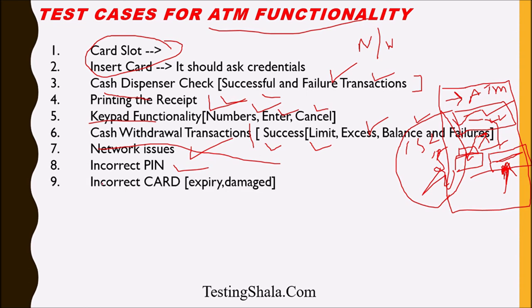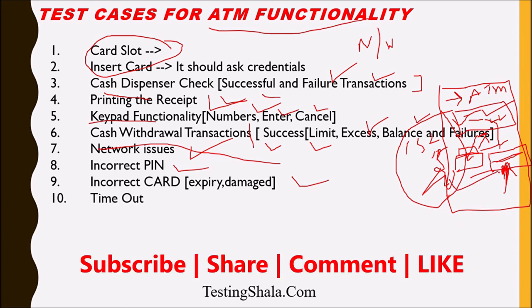The ninth test case is: if a person inserts an invalid card — such as an expired card or a damaged card — the ATM should give the right error message. The tenth test case is timeout validation: if the network is very slow and the ATM cannot complete the operation within the expected timeline, it should time out with the appropriate error message.